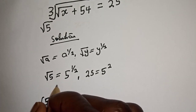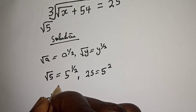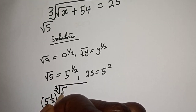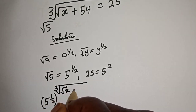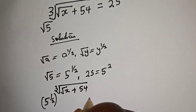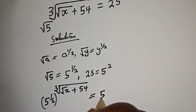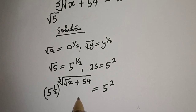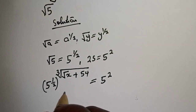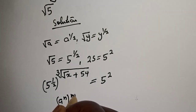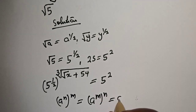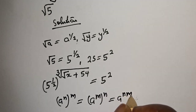So substituting, we have 5 raised to power one over two, to the power of cube root of square root of s plus 54, is equal to 5 squared. Note: if you have a raised to power n, to the power of m, this equals a raised to power m to the power of n, which equals a raised to power n times m.